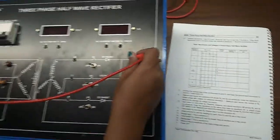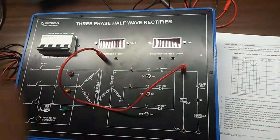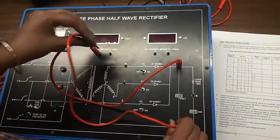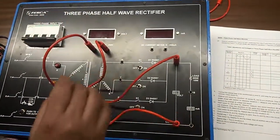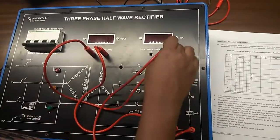First, we will connect the voltmeter here to observe the output voltage, and we will connect the current meter here to observe the output current.